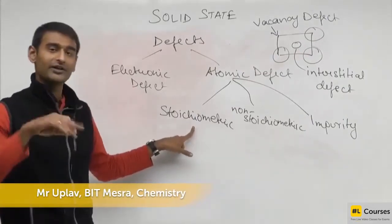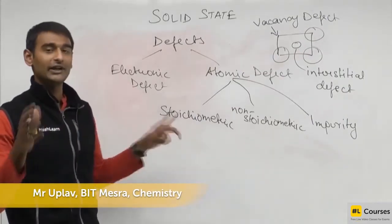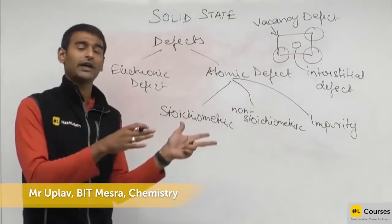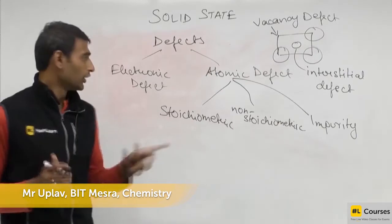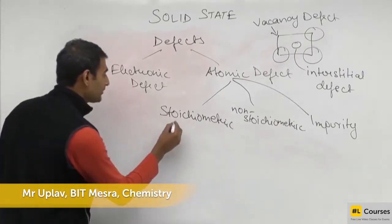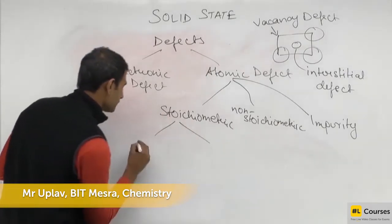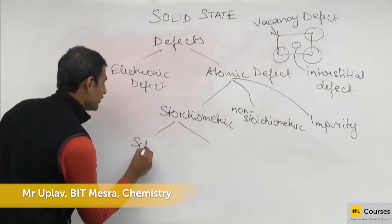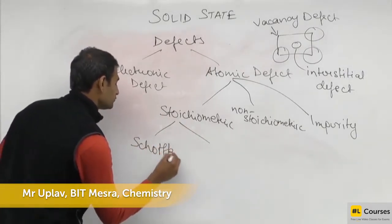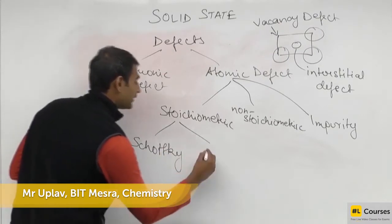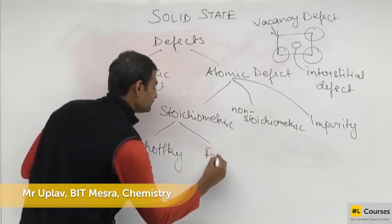There is a stoichiometric defect — it is that defect in which an equal number of cations and anions are missing. This is of two types: one is Schottky defect, and another is Frenkel.